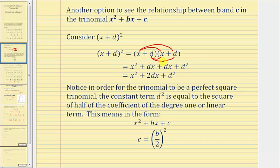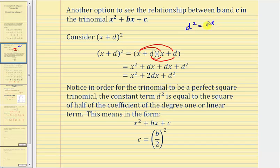In this form, we can recognize the relationship between the constant term d squared and the coefficient of the degree one term, which is 2d. The constant term d squared equals the square of half of the coefficient of the linear term. Half of 2d is 2d divided by 2, which simplifies to d, and squaring that gives d squared — so d squared equals d squared.